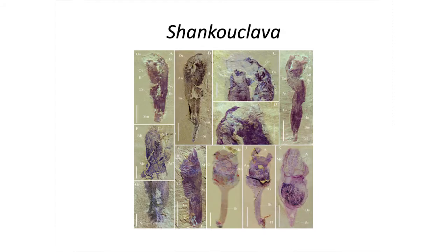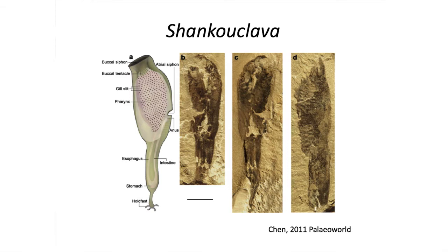One of the most interesting fossils from the Xinjiang fossil site is Shank-Oklava. This tiny creature resembles modern sea squirts, having a large chamber or pharynx, a gut tube, and a siphon for pumping water and filtering it for food. Shank-Oklava has a holdfast, indicating that like modern sea squirts, this euchordate was a sessile creature living on the ocean floor.